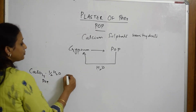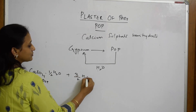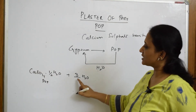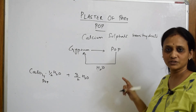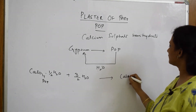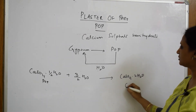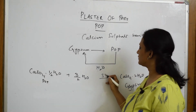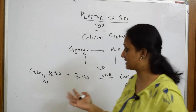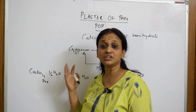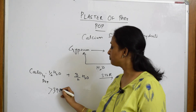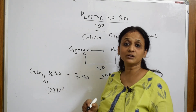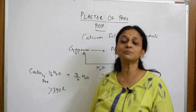Writing the reaction: CaSO₄·½H₂O is POP. When we add 3/2 water molecules to POP, the ½ plus 1 gives 2, so we get CaSO₄·2H₂O, which is gypsum. This conversion happens at 373 Kelvin.